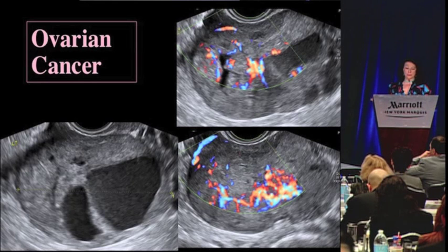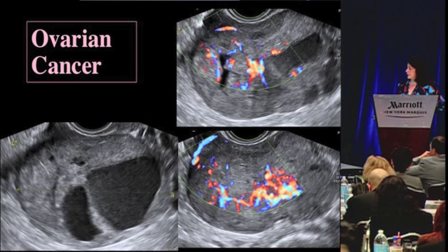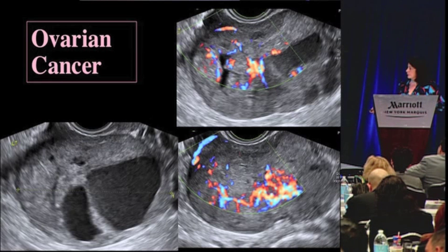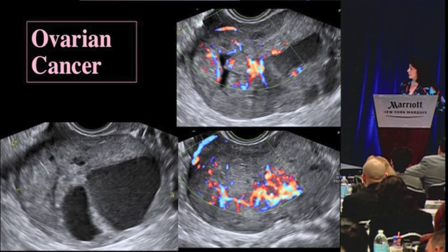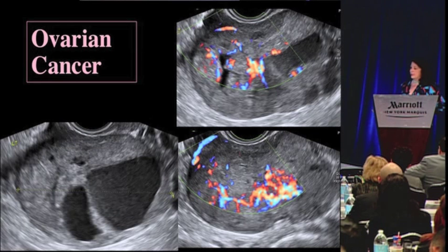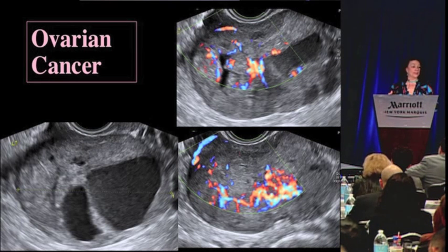This is a mass by ultrasound. It's a mass that has some cystic areas, you can see here, and some solid areas. And if you turn on the color flow Doppler, you can see blood flow within these solid areas. That's a lot of blood flow, very disorganized. Tumors have a lot of disorganized angiogenesis and a lot of blood flow.